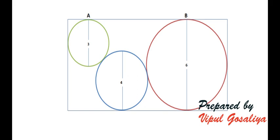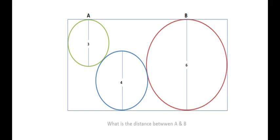In this puzzle there are 3 circles of diameter 3, 4 and 6. We have been challenged to find the distance between A and B.